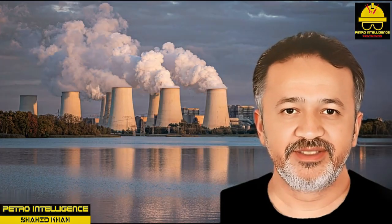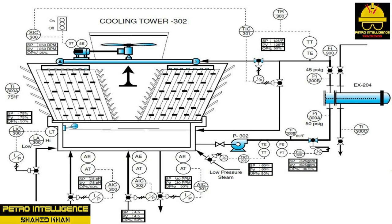Suspended solid chemical control AIC-302, an analytical indicating controller: the purpose of this controller is to control scale, algae, corrosion, wood decay, and to help suspended solids to precipitate out in the basin. AIC-302 monitors conditions in the basin and maintains unit specifications by adding liquid chemical treatment, set at 4.5 GPH.